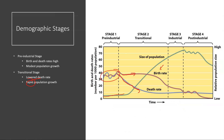What begins to happen as the country transitions to the industrialized stage is that education levels, access to health care, and access to contraception — particularly for female populations — tend to increase over time. As a result, late in that transitional stage and into the industrial stage, we see the birth rate begin to decline over time. During that industrial stage, we see a declining birth rate, and therefore the population growth rate slows. We start to see that decreasing growth rate over time.